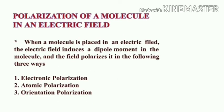Now we will see the effect of an electric field on a molecule. When a molecule is placed in an electric field, the field induces a dipole moment and polarizes the molecule in the following three ways: first, electronic polarization; second, atomic polarization; and third, orientation polarization. We will discuss each of these three types one by one.